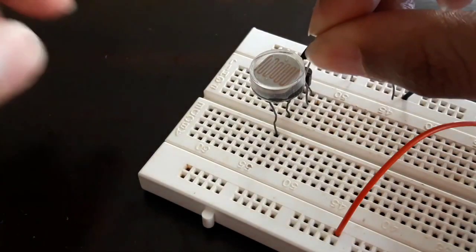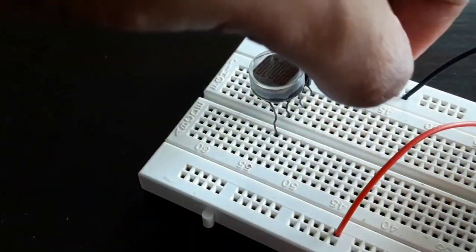Now connect the wire from the emitter of the transistor to the negative side of the breadboard.